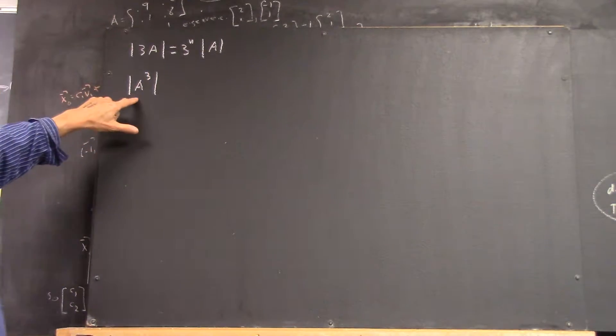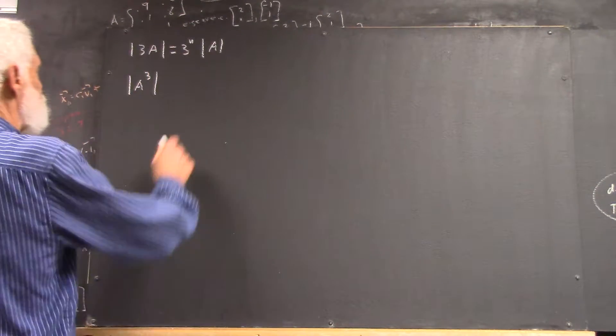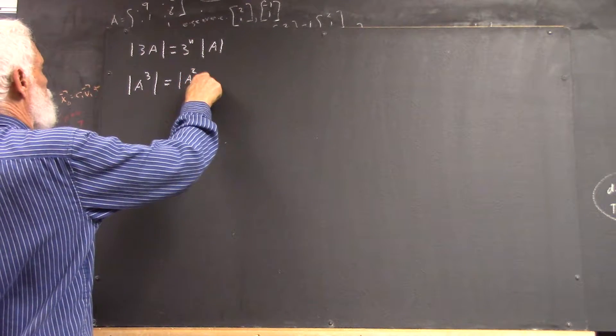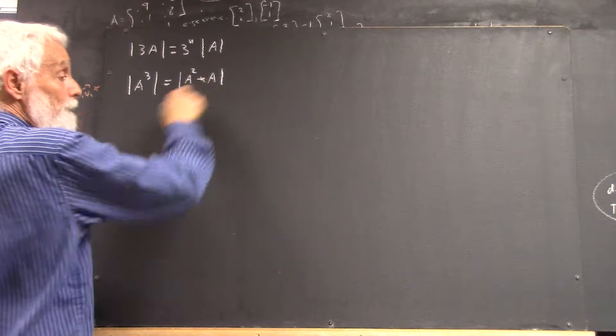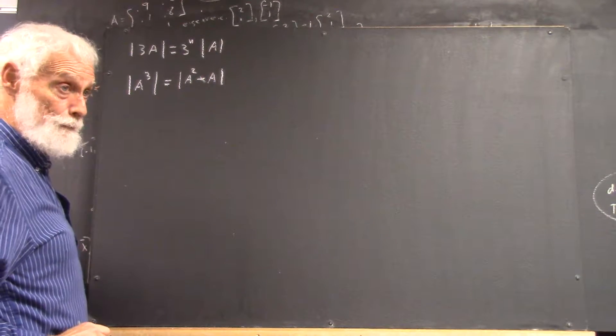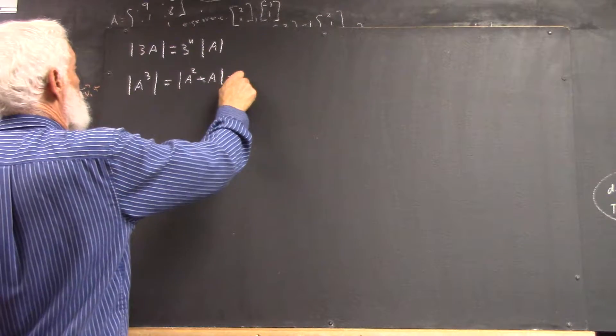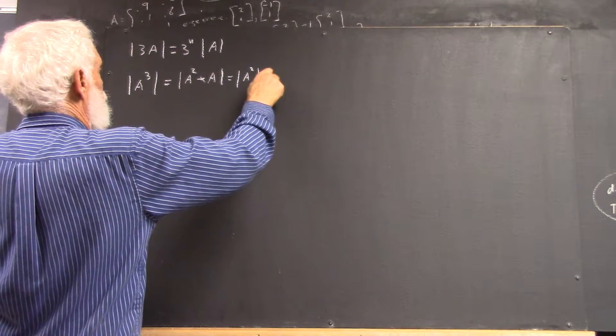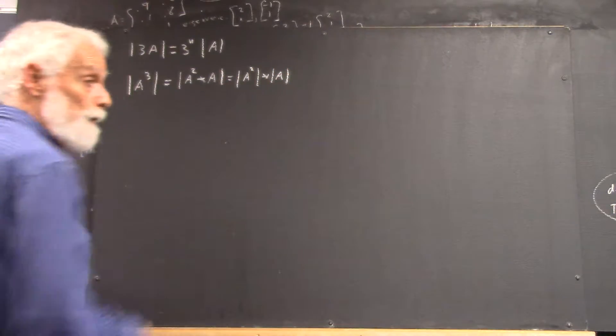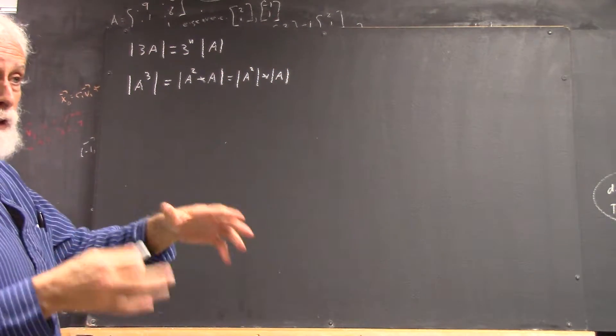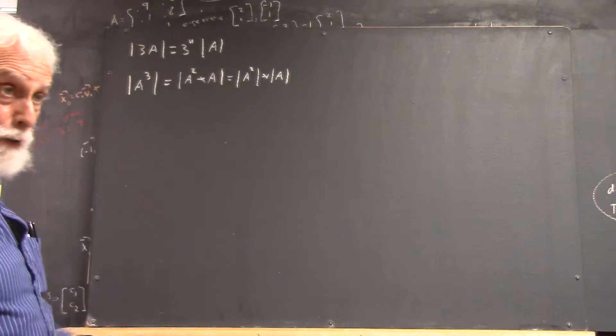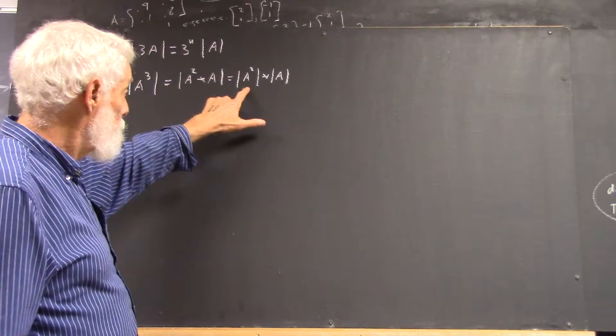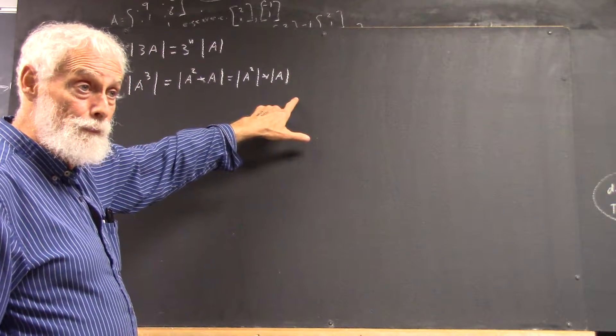Well, let's think of the determinant of A cubed. It seems to me that would be the determinant of A squared times A. Which is then, because determinants multiply in this fashion, right? Determinant of one matrix times another is the product of the determinants. So the determinant of this product is the product of these determinants.